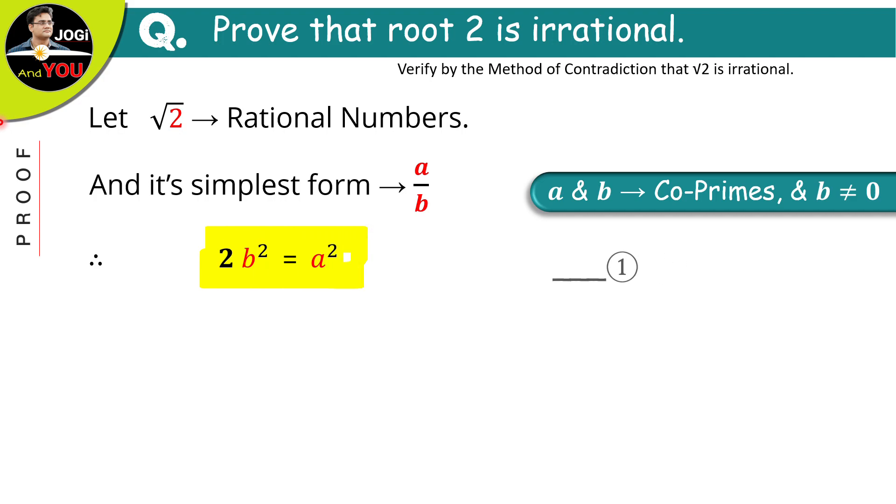In this equation, it is clear that the left side is divisible by 2. Look at here, 2 to 2 cancel. So, here 2 divides 2b square which is our left side. So, we can say that 2 will divide the right side also.